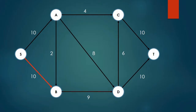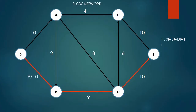Next, we update the flow of each edge in our path in the flow network. For each edge in the path, we represent each edge as the current flow in comparison to the maximum capacity of the edge. So, edge S to B would be 9 over 10, edge B to D would be 9 over 9, and edge D to T would be 9 over 10.